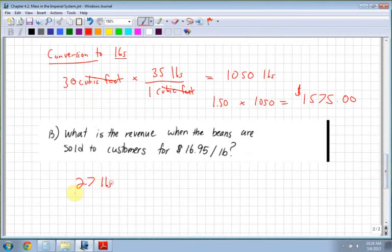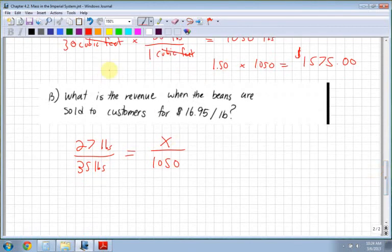The revenue for beans is, I'm going to have 27, and remember this is 27 pounds after they're roasted. So 27 pounds over 35 pounds, which is equal to, I don't know how much that's going to be, over 1,050.